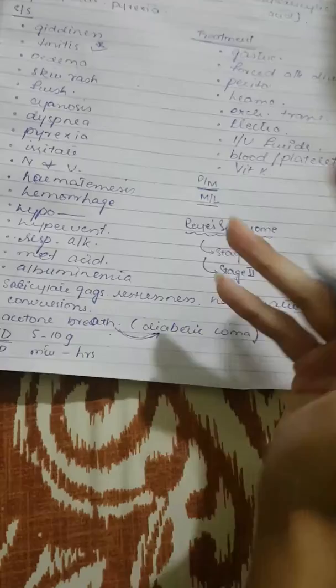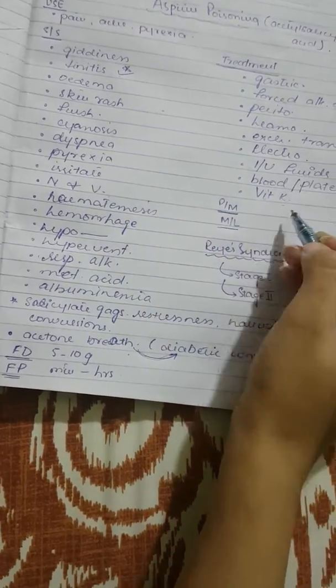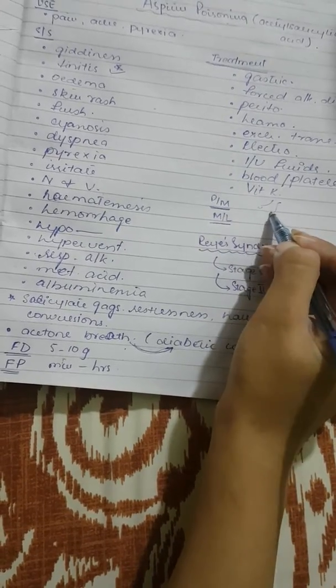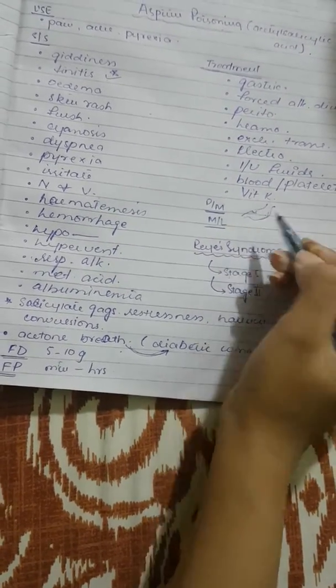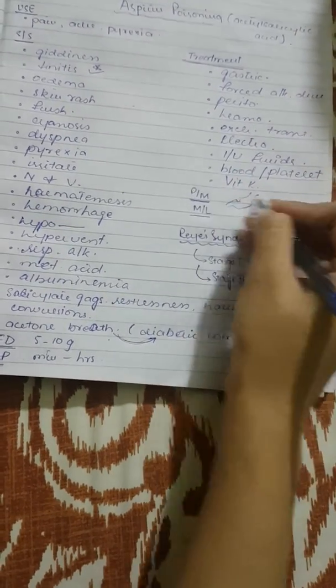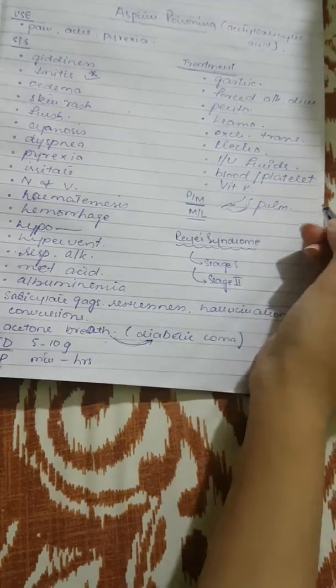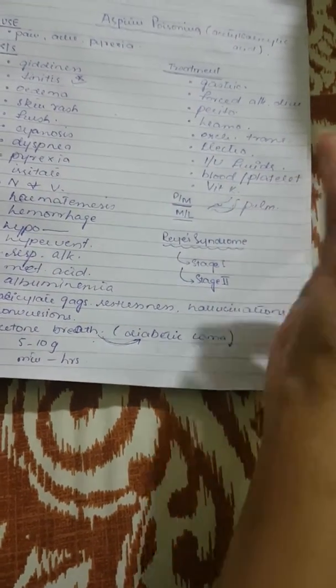The post-mortem changes will include particles of aspirin in the gastric mucosa and the GIT will be irritated, and there will be petechial hemorrhages, hypoprothrombonemia. One thing that you need to know is pulmonary edema.